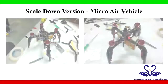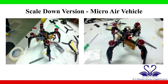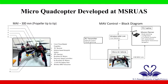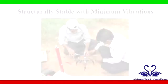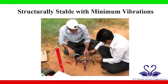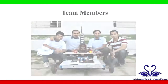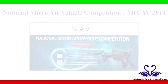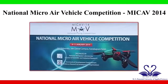They were later scaled down to be classified under the micro air vehicle category. The micro quadcopter developed at MSR UAS has dimensions less than 300 mm and an endurance of 11 minutes. The system was found to be structurally stable with minimum vibrations. Team MSR UAS was successful in completing its mission at the National Level Micro Air Vehicle Competition, MICAV 2014.